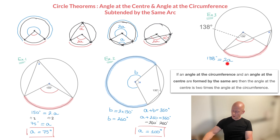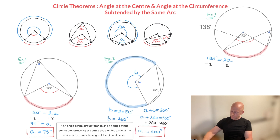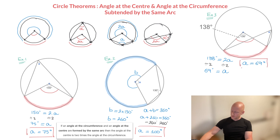To find A, all we have to do is divide both sides of this equation by 2. 138 divided by 2 is 69, so that's 69 degrees, equal to 2A divided by 2, which is just A. A must therefore be equal to 69 degrees. That's the answer.